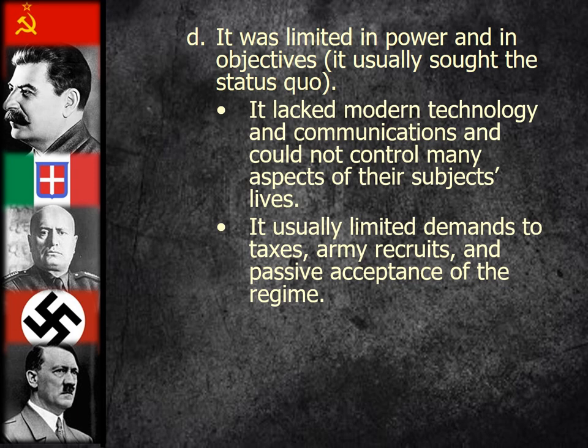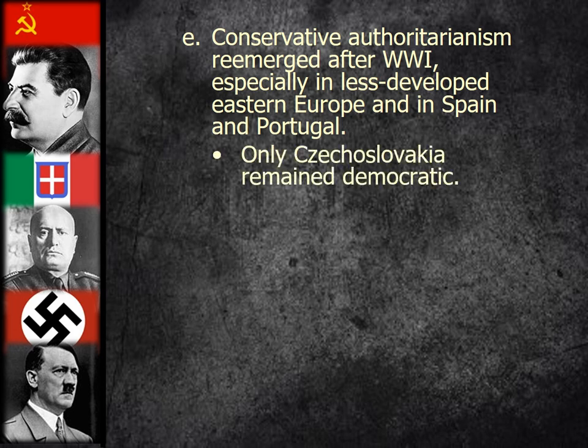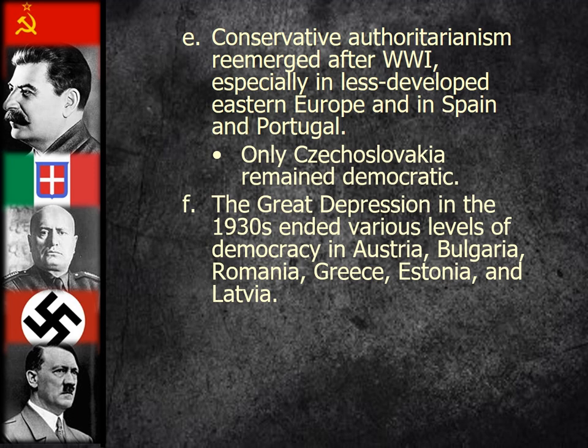Authoritarianism was limited in power and its objectives. Absolute monarchs usually sought the status quo, and they lacked modern technology and communications to control many aspects of their subjects' lives. They usually limited demands to taxes, army recruitment, and passive acceptance of the regime. Conservative authoritarianism reemerged after World War I, especially in less-developed Eastern Europe, Spain, and Portugal. Only Czechoslovakia remained democratic. The Great Depression in the 1930s ended various levels of democracy in Austria, Bulgaria, Romania, Greece, Estonia, and Latvia.